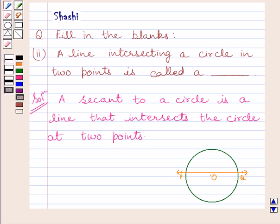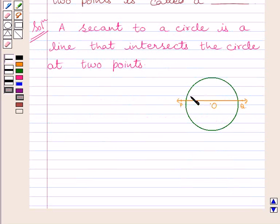Now, clearly we can see, we are given a circle with center O and PQ is a secant intersecting the circle at two points. We can name these points as A and B.